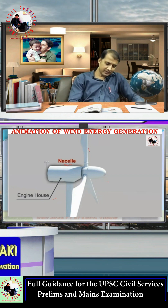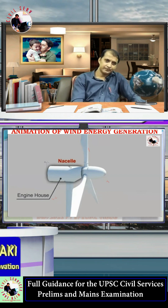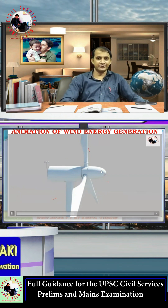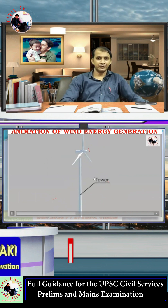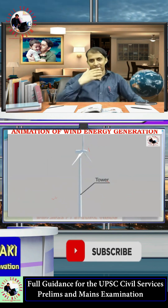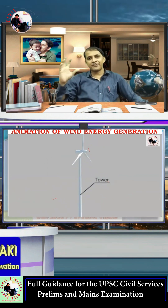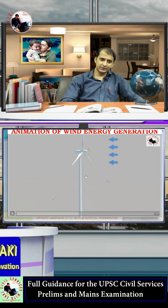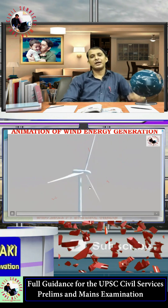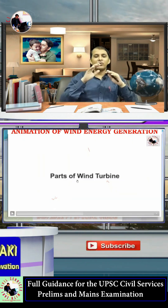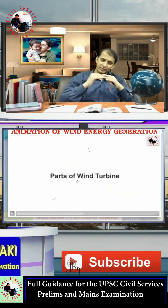The nacelle and rotor assembly is installed on a tower. The tower is tall so that it can capture more wind. Together, these components make up the wind turbine structure, and we will now look at the individual parts.